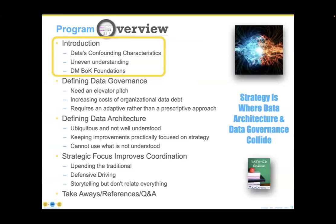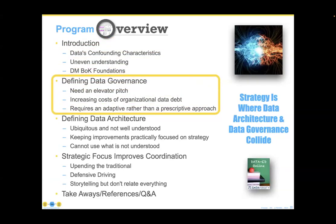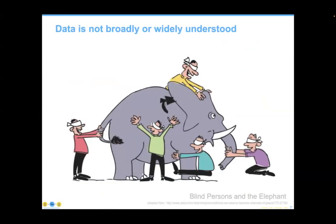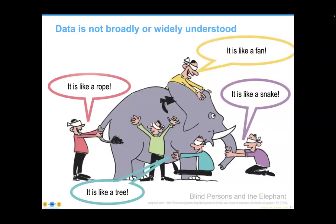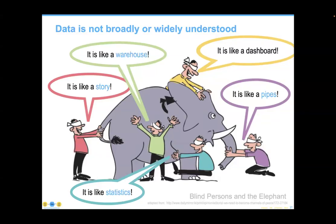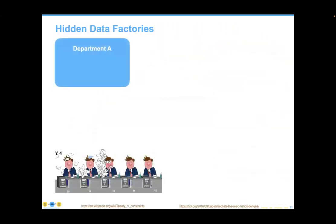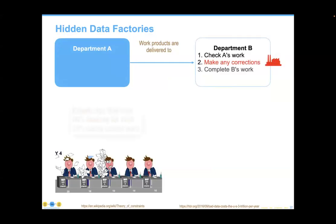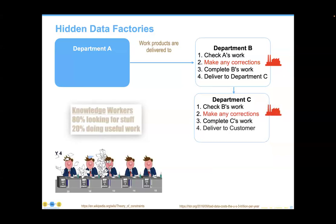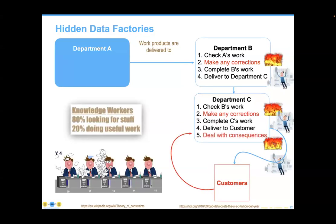Most people figure moving to the cloud means they don't have to pay attention to architecture — I contend the opposite is true. In order to come up with a true data strategy, you need to have an architecture, because all architectures have strategy as an integral component. Let's dive into data governance and the need for an elevator pitch. Data is not broadly understood — just like blind individuals approaching an elephant, people come to data with different perspectives: thinking it's a dashboard, or statistics, or pipes.